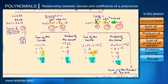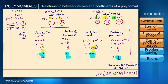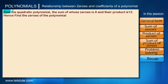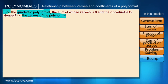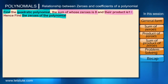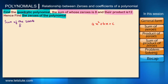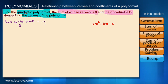With the help of these relations or simple formulas we've established, we can solve different types of problems based on zeros of a polynomial. Suppose we are asked to find a quadratic polynomial where the sum of the zeros is eight and the product of the zeros is twelve.